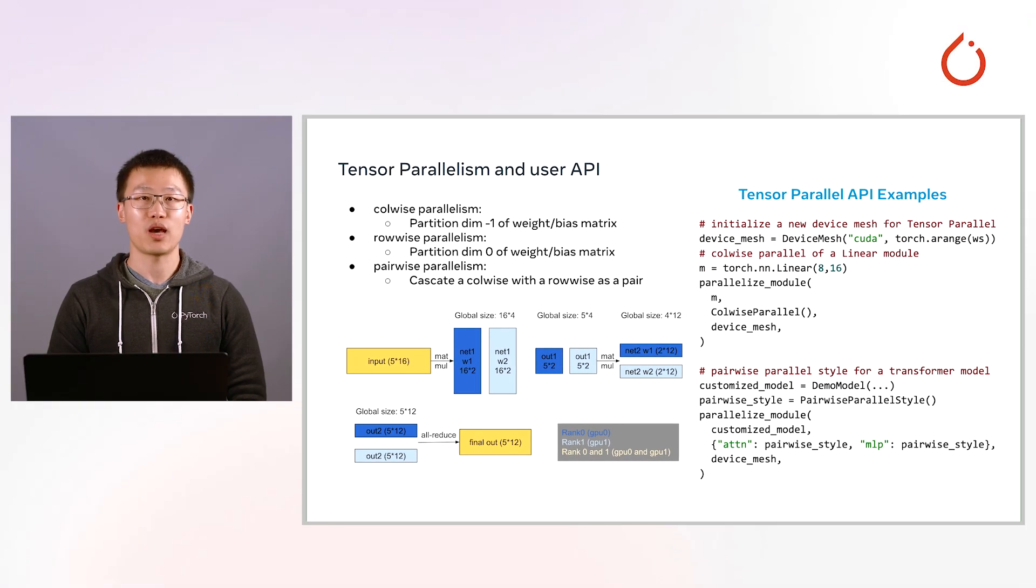When it comes to API, users don't need to change their module or code. They just need to call this high-level API, ParallelizeModule, with ParallelizeStyle specified per module, to get the model partitioned. Next, we will handle all the hassles during model training and inference.